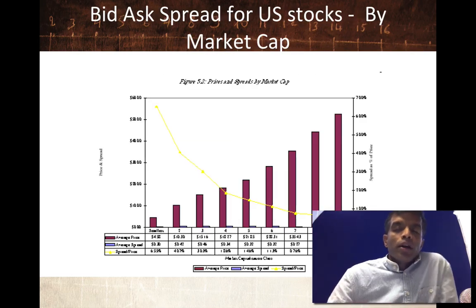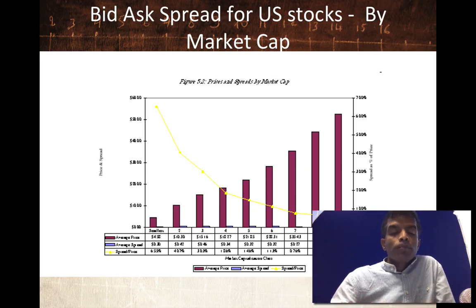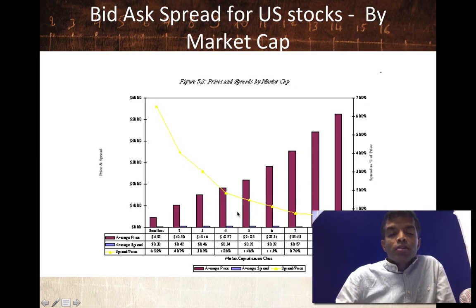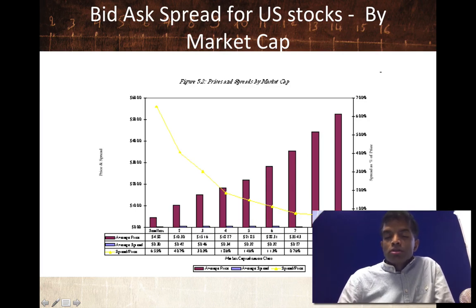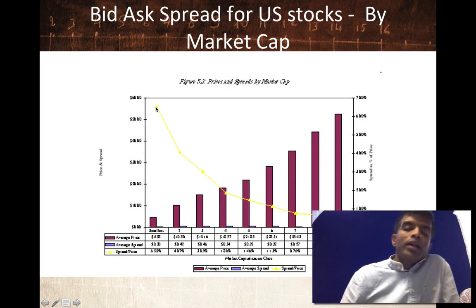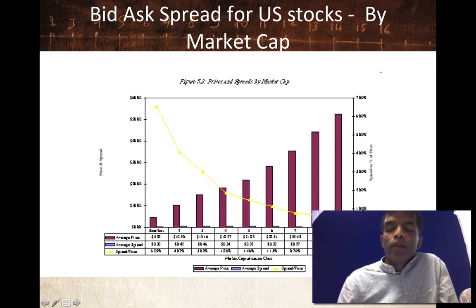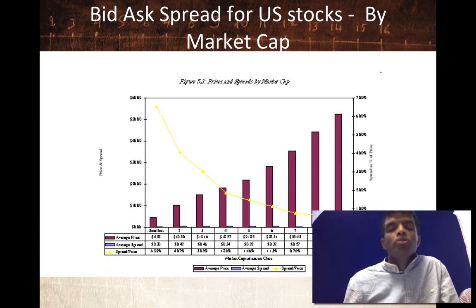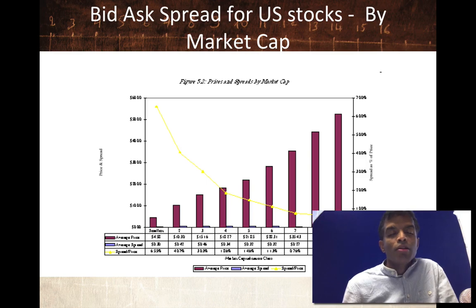Let's look at how much spreads vary across stocks. One axis shows the spread as a percentage of the price; the other classifies companies from smallest to largest. The smallest companies have a bid-ask spread of about 7% of the stock price. The largest companies have a bid-ask spread down to about half a percent. So small market-cap stocks tend to have much bigger bid-ask spreads than large market-cap stocks. If you have a strategy that requires you to invest in a lot of small companies, don't be surprised if your actual returns lag your paper returns — think of how much money you're leaving on the table because of the bid-ask spread.